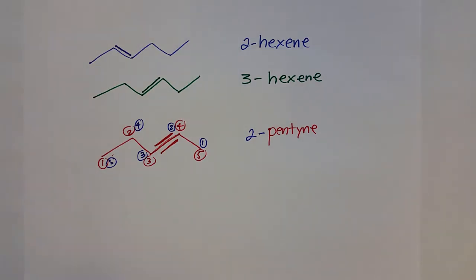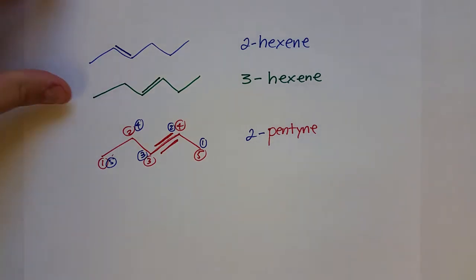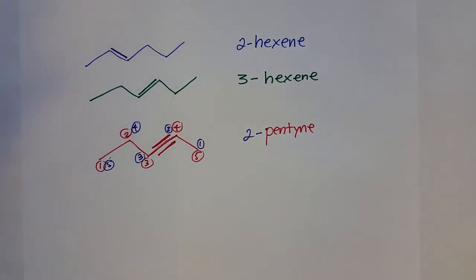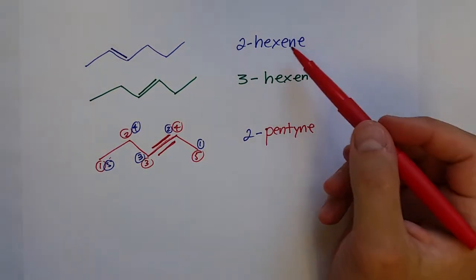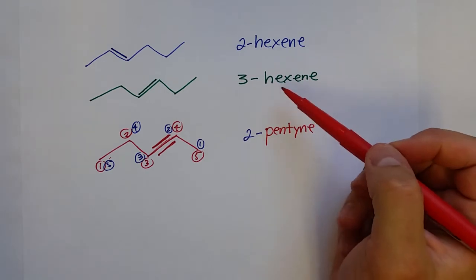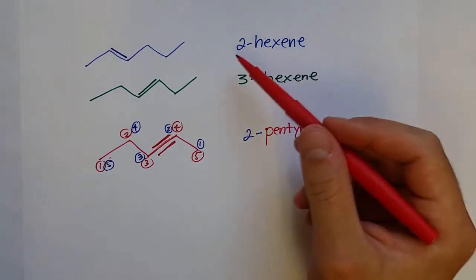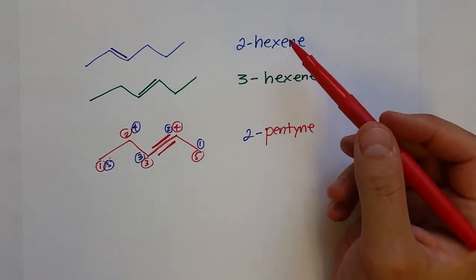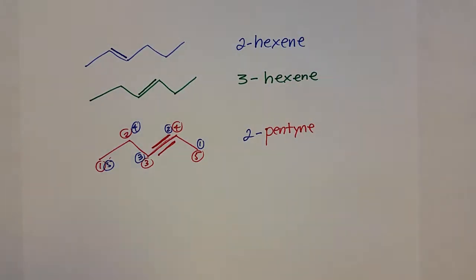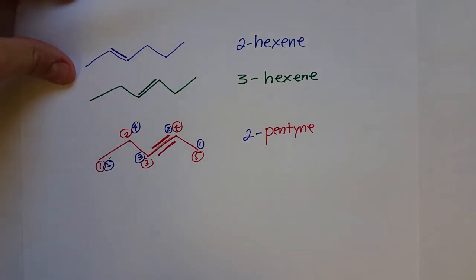It turns out there's another issue with double bonds. Even with 2-hexene or 3-hexene, there's another isomer that can develop, and that is known as cis-trans isomers.